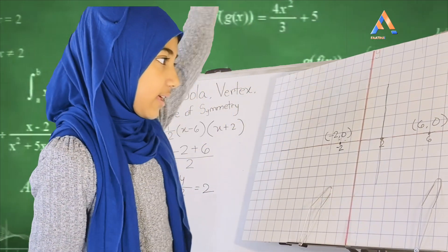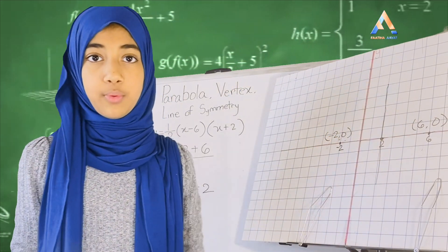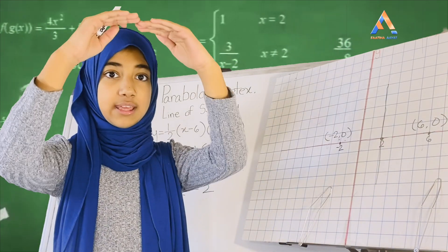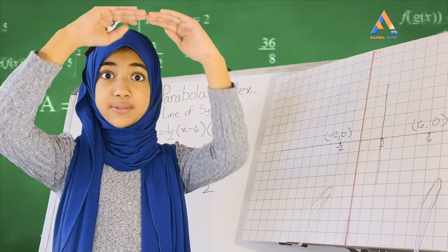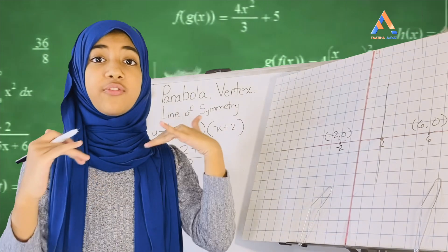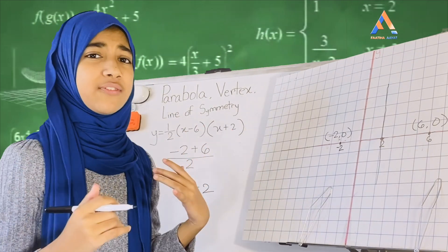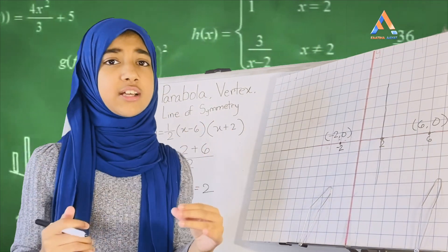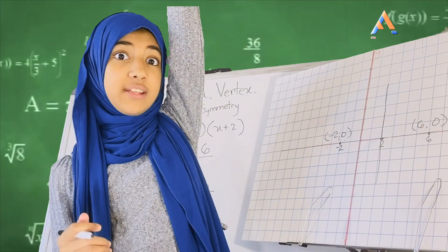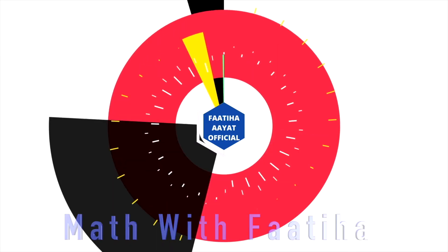A parabola can either be like an upside-down U or just a U. We need to figure that out and we need to figure out the vertex. The vertex is basically the highest point of the parabola or the lowest point of the parabola.